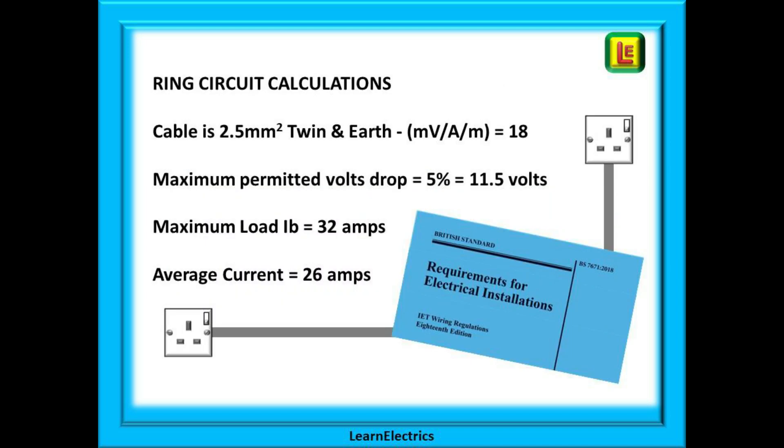For our calculations we've agreed the cable will be standard 70 degree gray 2.5 millimeter twin and earth. From the tables in the regulations we found that the MVAM number for this cable is the number 18. This tells us that our 2.5 cable will lose 18 millivolts for every amp that flows through every meter of cable.